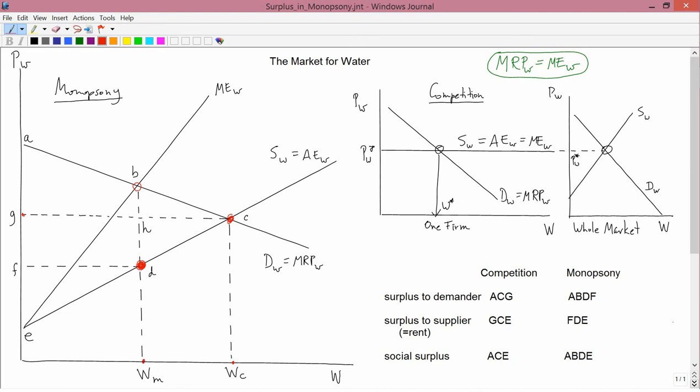So it's that triangular-shaped area. It wouldn't be a triangle if the demand curve weren't exactly a straight line, but it's more or less a triangular-shaped area.